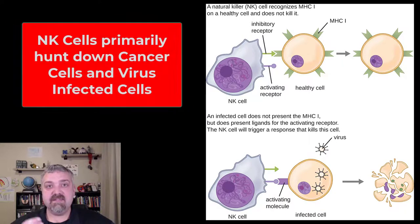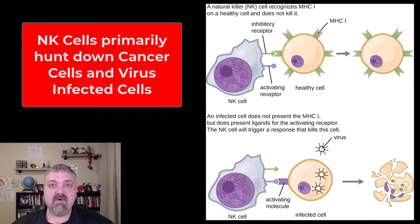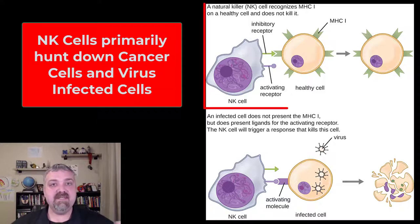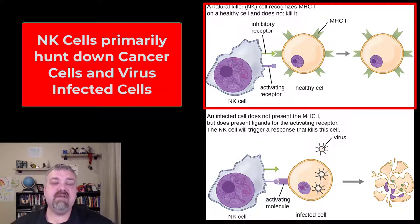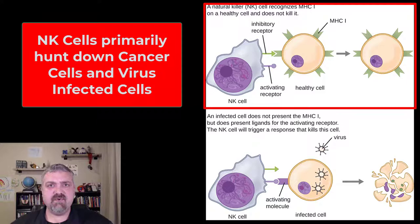What it does is it bounces around and it's looking for cells that are either cancerous or infected with viruses. If it bumps into a normal cell, it recognizes what are called MHC1, or major histocompatibility complexes, that say this cell is normal — nothing wrong with it, nothing to see here — and it moves on.